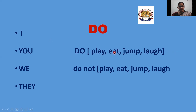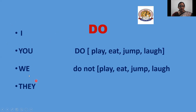I play, I eat, I jump, I laugh. In the same way: we do not play, we do not eat, we do not jump, we do not laugh, they play, they eat. So when we have to use do or do not — whose short form is don't — we should use I, you, we and they.